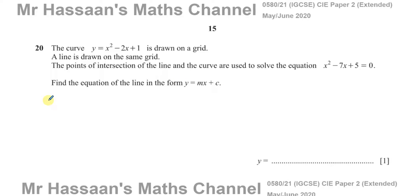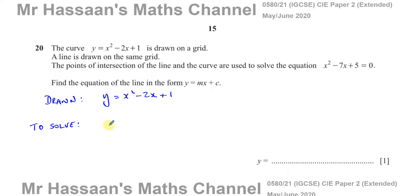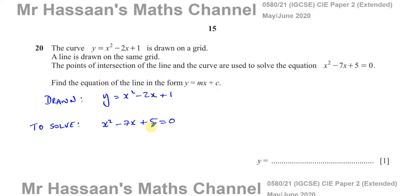Find the equation of the line in the form y equals mx plus c. This is a type of question where you have a line that's drawn. The curve drawn is y equals x squared minus 2x plus 1, and we have to use this graph to solve graphically the equation x squared minus 7x plus 5 equals 0.